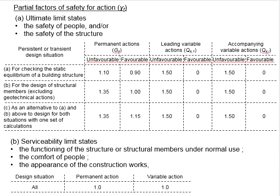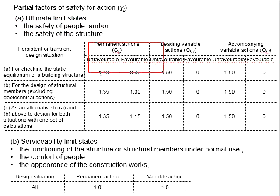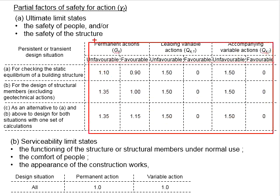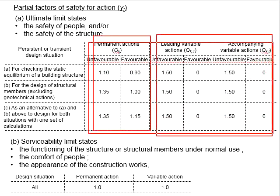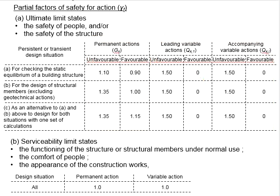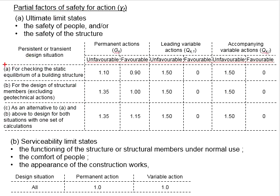The partial factor of safety for actions at the ultimate limit state — which is meant for the safety of people and the structure — includes partial factors for permanent actions and variable actions. These are defined by different design situations. The first case is for checking the static equilibrium of a building structure.